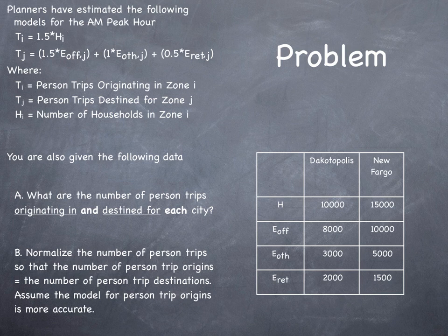Tj equals 1.5 times Hoff j, the number of office employees in zone j, plus 1 times Hother j, the number of other employees in zone j, plus 0.5 times Hret j, the number of retail employees in zone j. You're also given the following data shown in the table.